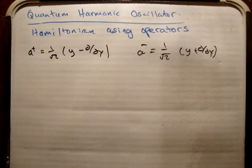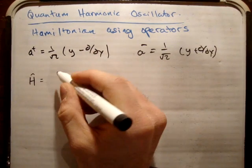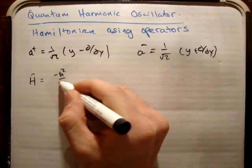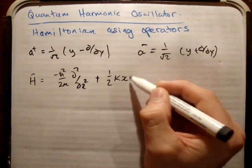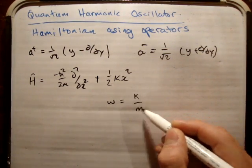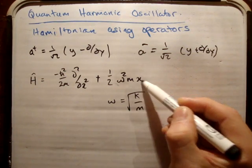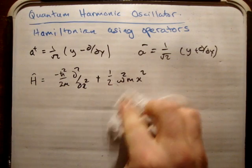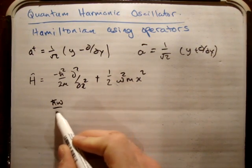So A plus for example is 1 over root 2 times (y minus d/dy). If you go back to the very first video in this set, you would have seen I did the writing of the Schrödinger equation in dimensionless form. In order to do that I needed to write the Hamiltonian in dimensionless form. So the Hamiltonian operator was equal to minus h-bar squared over 2m times d²/dx², plus the potential energy for a harmonic oscillator which is 1/2 kx². And we made the substitution that omega equals the square root of k over m. The zero point energy is 1/2 h-bar omega.